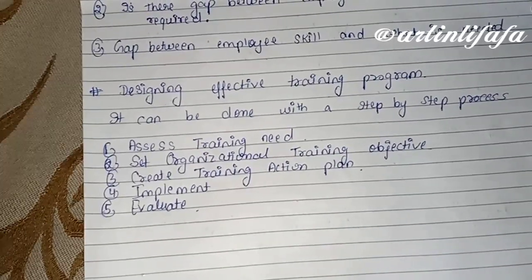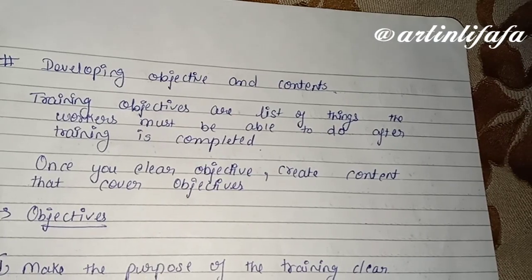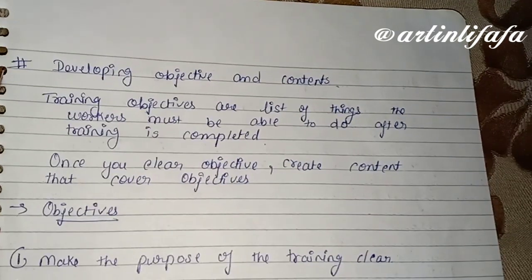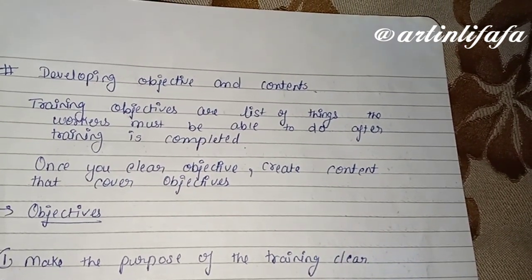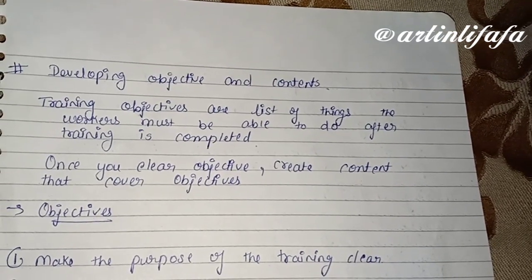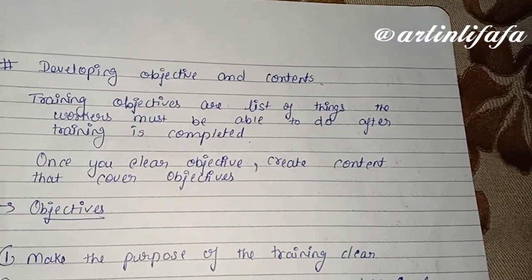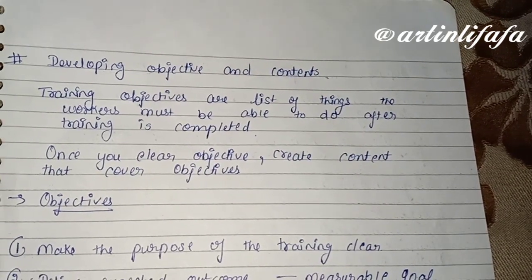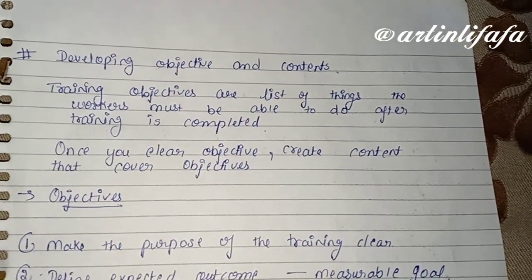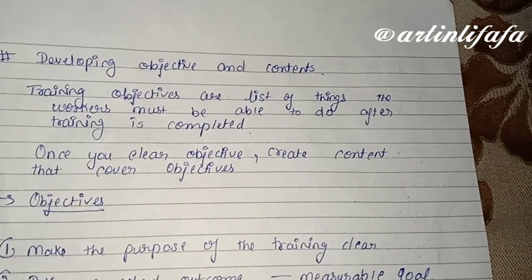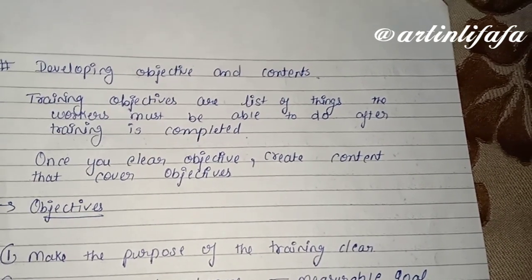And then we evaluate: check करेंगे कि हमारी जो training हुई है वो effective हुई है या नहीं। Next is developing objectives and content। हमने training program तो design कर लिया, लेकिन objective और content को भी develop करना पड़ेगा। Training objectives are a list of things a worker must be able to do after training is completed।